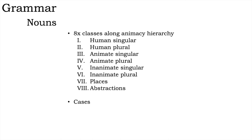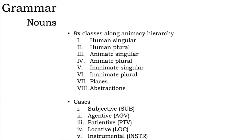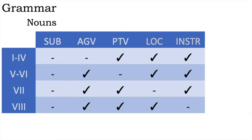Nouns also have a minimal case system. Broadly speaking, nouns are unmarked in expected situations and marked elsewhere. A tick means the form is marked, while a dash means unmarked. All nouns are unmarked when they are the subject of an intransitive verb. Classes one through four — the humans and animates — we expect to be doing things, so they are unmarked when they are agents and marked elsewhere. Inanimate things are expected to have things done to them, so are unmarked when they are patients but marked for other roles. Places are unmarked for the locative, and abstractions are unmarked for what I've called the instrumental case, for simplicity's sake.